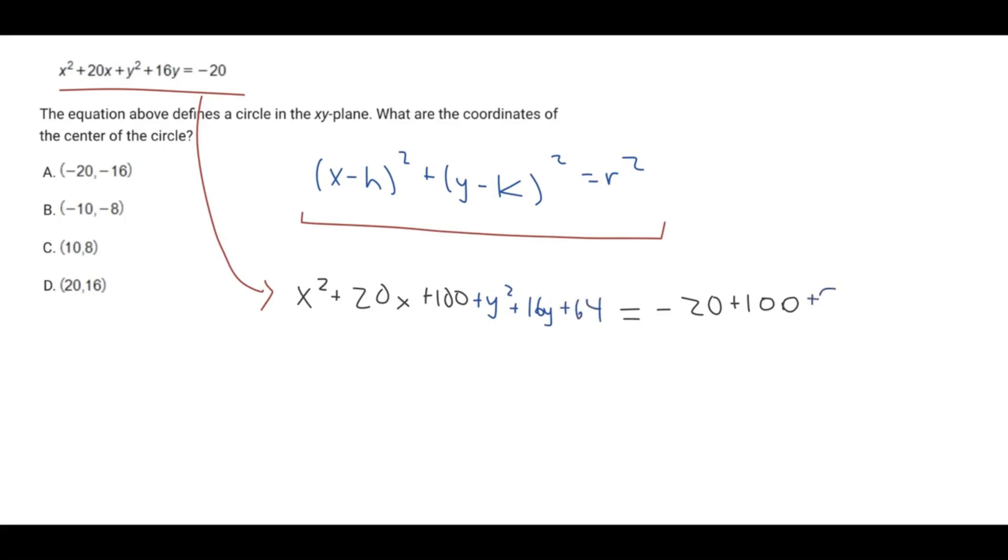And so now we can actually get it into our circle equation form because watch what happens. So here, this is going to factor out to just x plus 10 squared. And this side is going to become y plus 8 squared. And this thing over here, this computes to 144.